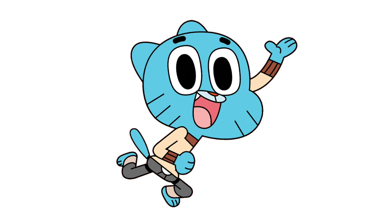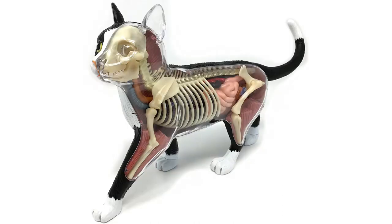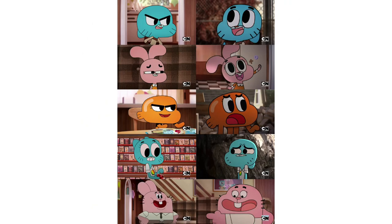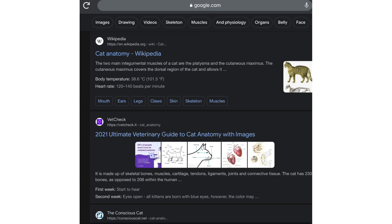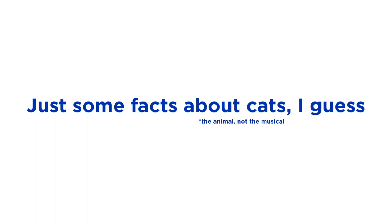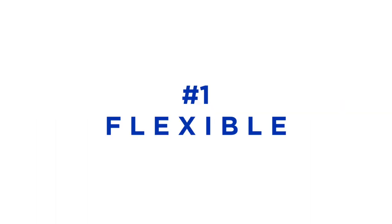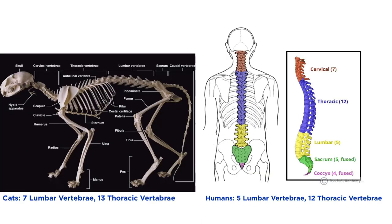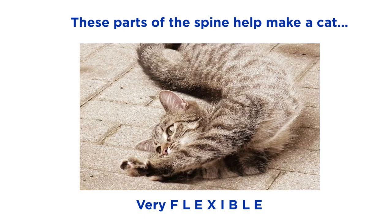Before Gumball can return to cats, we must understand anatomy first. His current anatomy is based on his cartoon art style, which is anthropomorphized. I did research on real cat anatomy, and here's some distinct details about what I found. Cats have extra-long lumbar and thoracic vertebrae in ratio compared to a human spine, and these parts of the spine are what make a cat extremely flexible.